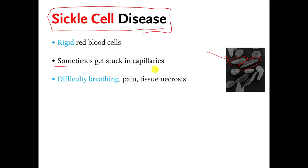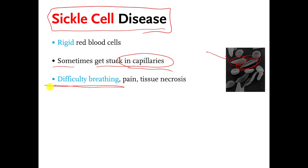Sometimes these stretched-out red blood cells get stuck in narrow blood vessels. When this happens, people have difficulty breathing and there's a tremendous amount of pain. They get significant tissue damage. People who have sickle cell disease have an average life expectancy that's a lot less than a healthy person who does not have sickle cell disease.